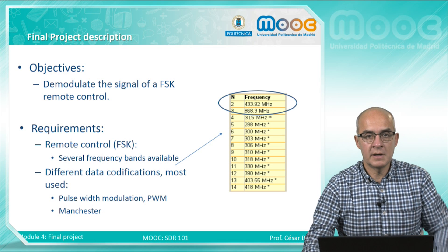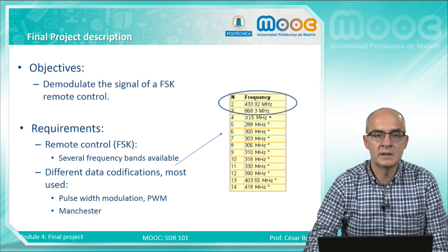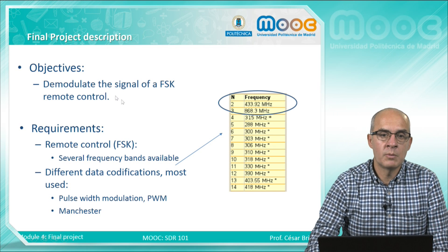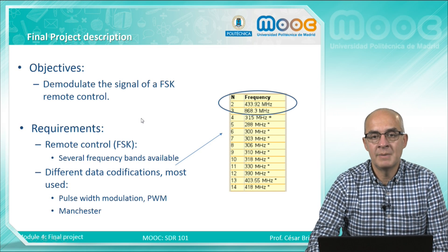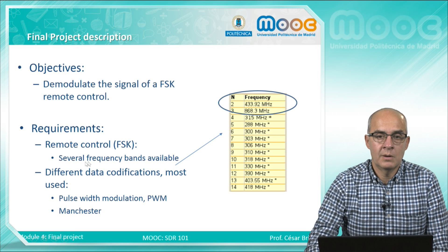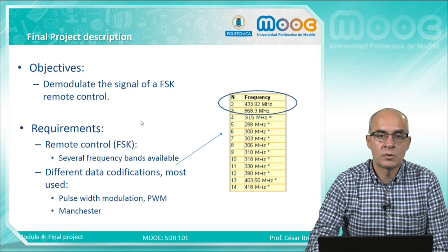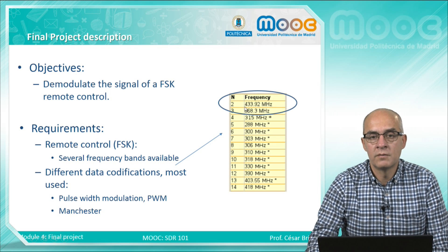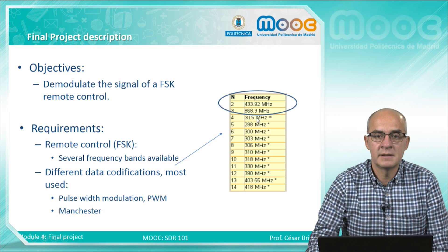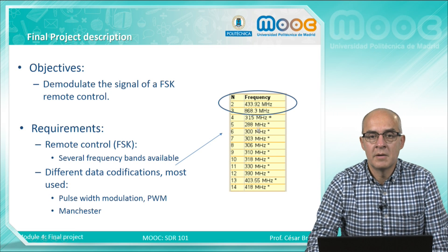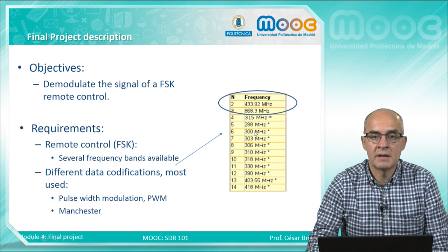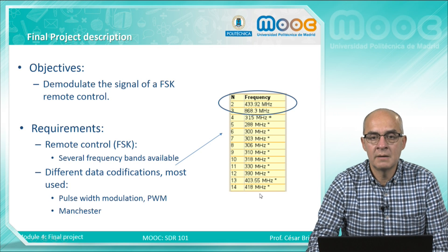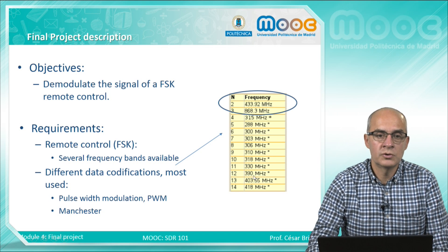Let's talk first about FSK and the objectives of the project. The idea is to demodulate the signal and to obtain the binary data of a remote control. We will use an FSK remote control where there are several frequency bands. The most used in Europe are 433.92 MHz and 868.3 MHz, but there are other bands like 315 or 418 MHz also used in remote controls.